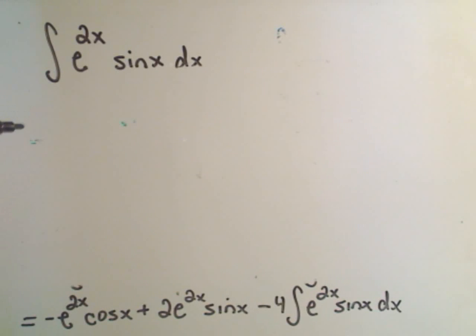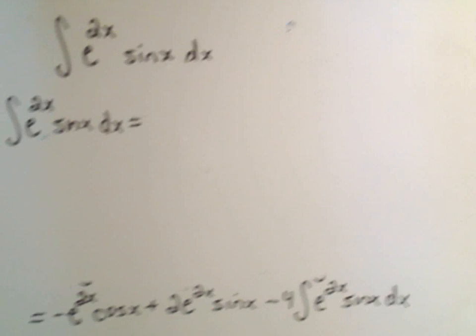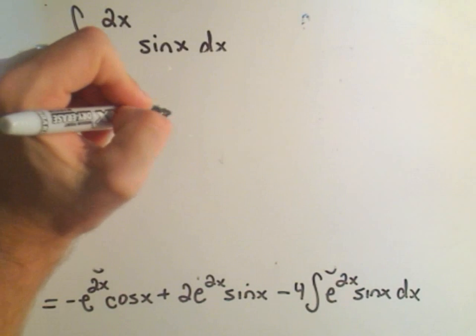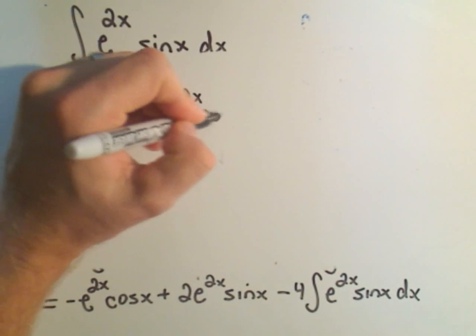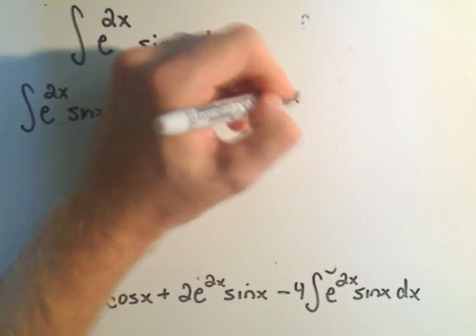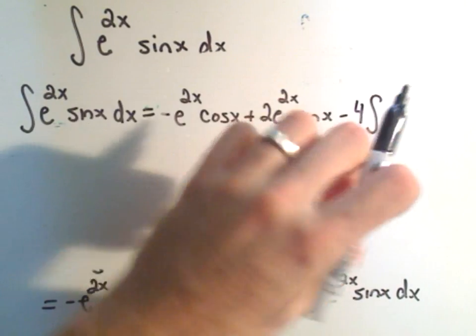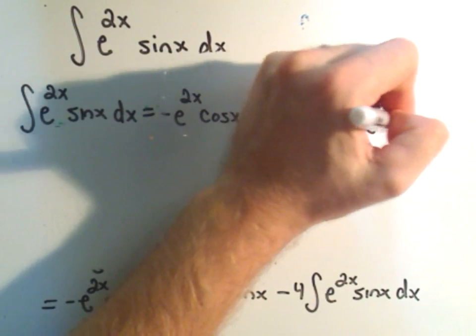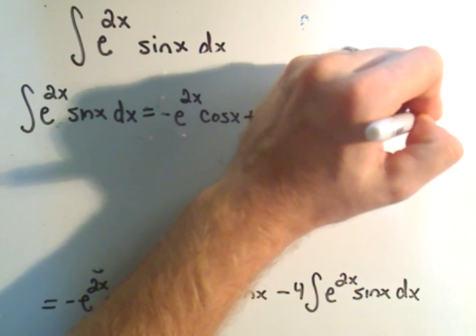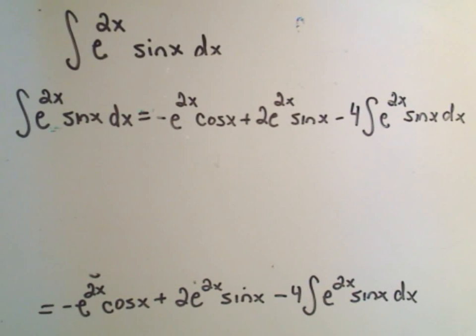Okay, what we've shown at this point then is that the integral of e to the 2x sine x dx, what we've shown is that equals everything at the bottom, which is negative e to the 2x cosine x plus 2e to the 2x sine x minus 4 times the integral of e to the 2x sine x dx. Okay, so that's what we've shown at this point.